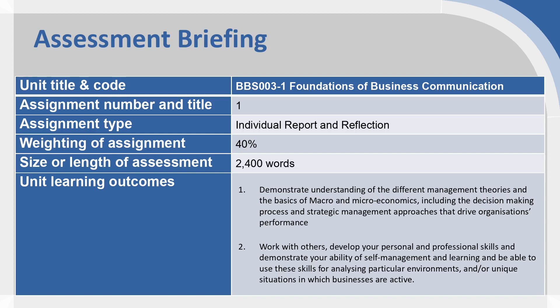The first learning outcome is about demonstrating your understanding of different management theories, including decision-making processes and strategic management approaches. The second learning outcome is focused on your key skills — your own personal and professional skills, your ability to manage the learning process, and working not just alone but also with others within a team.